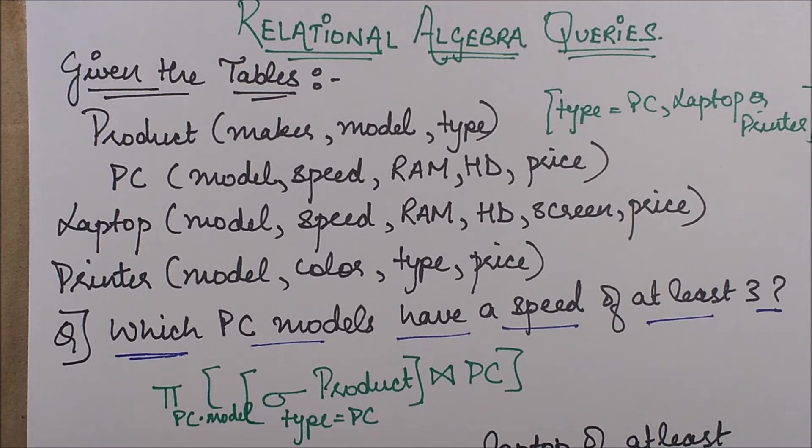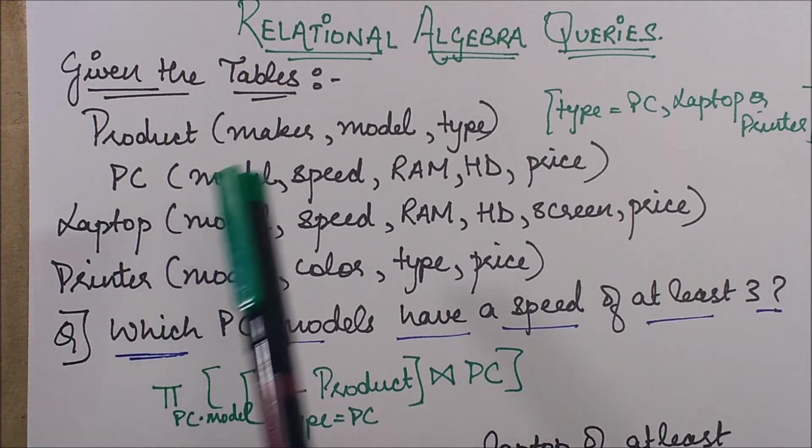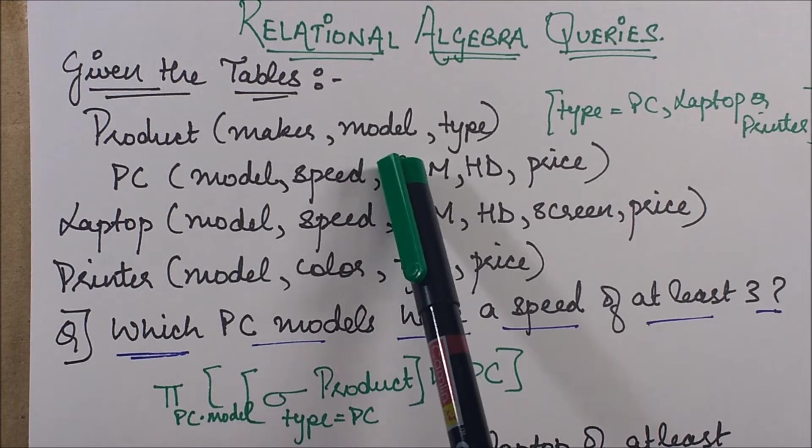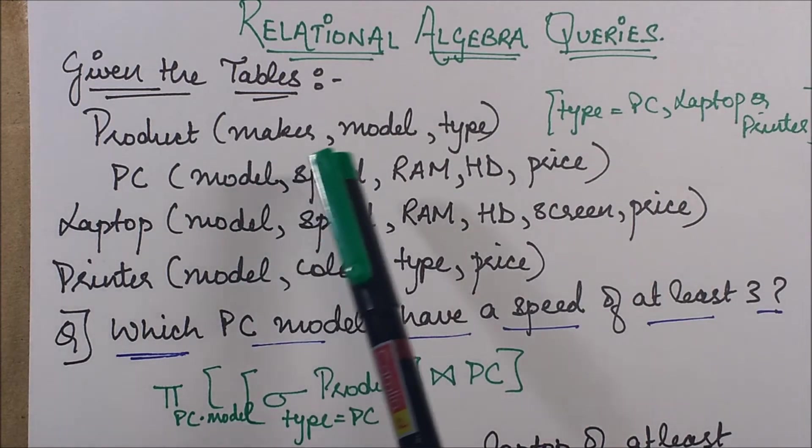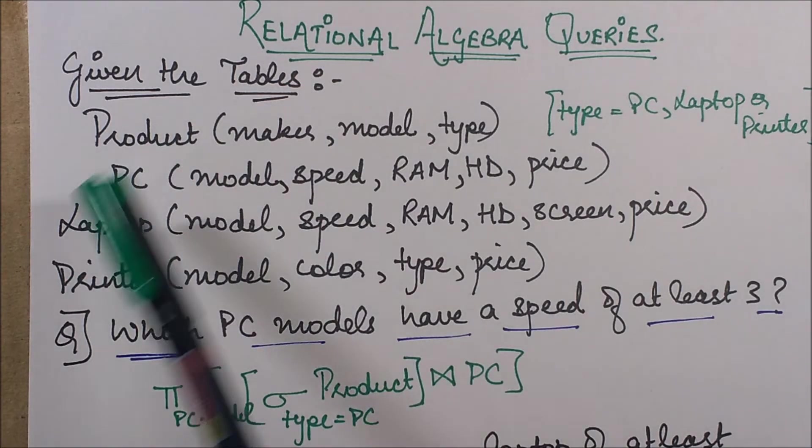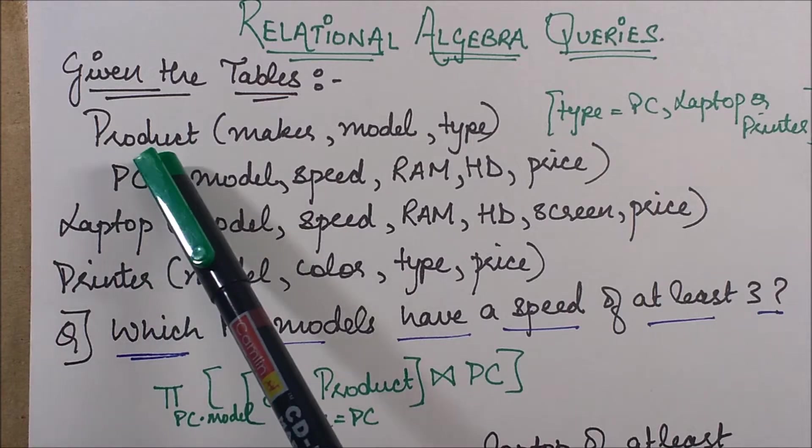First of all, we have these four tables. The Product table represents the manufacturer of a certain product whose model number is this, and the type of product can be PC, laptop, or printer. Corresponding information of the products are stored in these three tables.